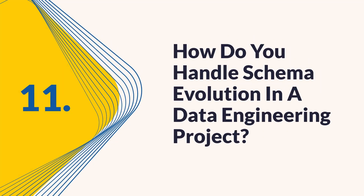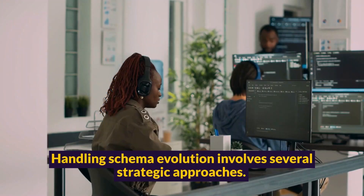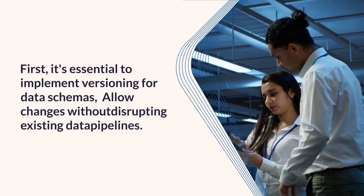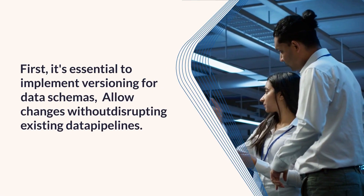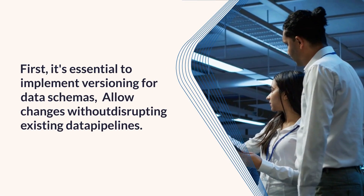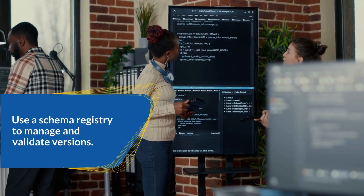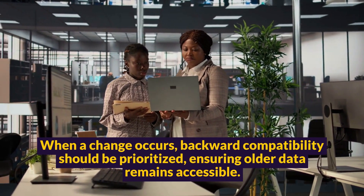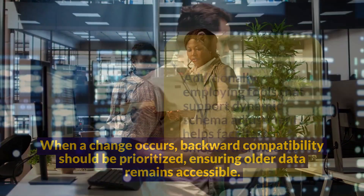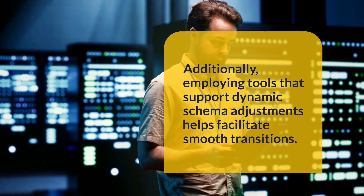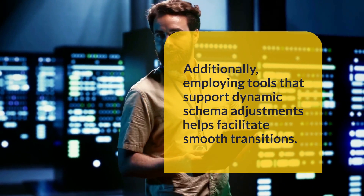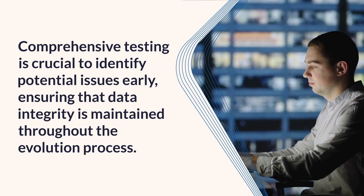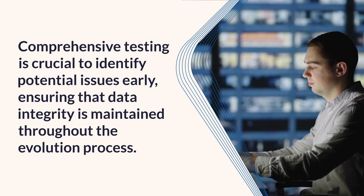Question 11: How do you handle schema evolution in a data engineering project? Handling schema evolution involves several strategic approaches. First, it's essential to implement versioning for data schemas, allowing for changes without disrupting existing data pipelines. Utilizing a schema registry can help manage and validate these versions. When a change occurs, backward compatibility should be prioritized, ensuring older data remains accessible. Additionally, employing tools that support dynamic schema adjustments helps facilitate smooth transitions. Comprehensive testing is crucial to identify potential issues early, ensuring that data integrity is maintained throughout the evolution process.